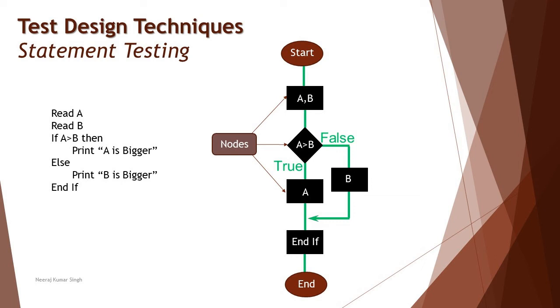We are converting this fragment of code into a flowchart. If you see the black boxes here, they are generally referred to as statements or nodes which are in the flow chart. Each line written on the left is a node or a statement for me.